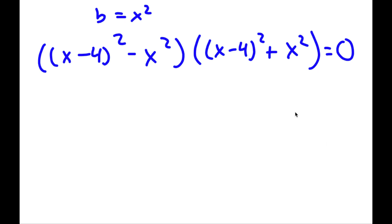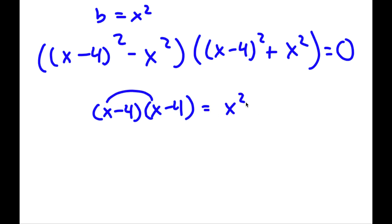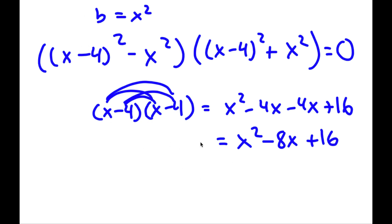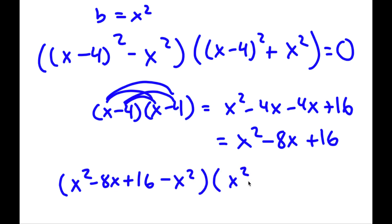Now we can expand (x minus 4)² to simplify. So (x minus 4)² equals (x minus 4)(x minus 4). Distributing: x times x is x², x times negative 4 is negative 4x, negative 4 times x is negative 4x, and negative 4 times negative 4 is positive 16. So negative 4x minus 4x is negative 8x, giving us x² minus 8x plus 16. Substituting back, we get (x² minus 8x plus 16 minus x²) times (x² minus 8x plus 16 plus x²) equals zero.